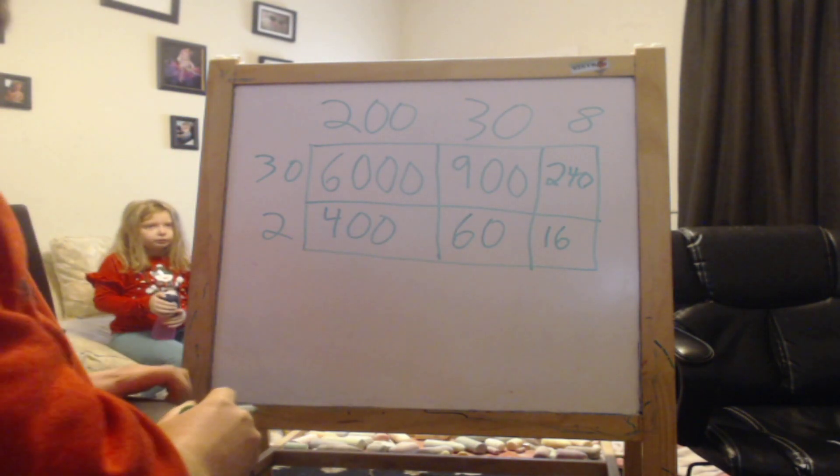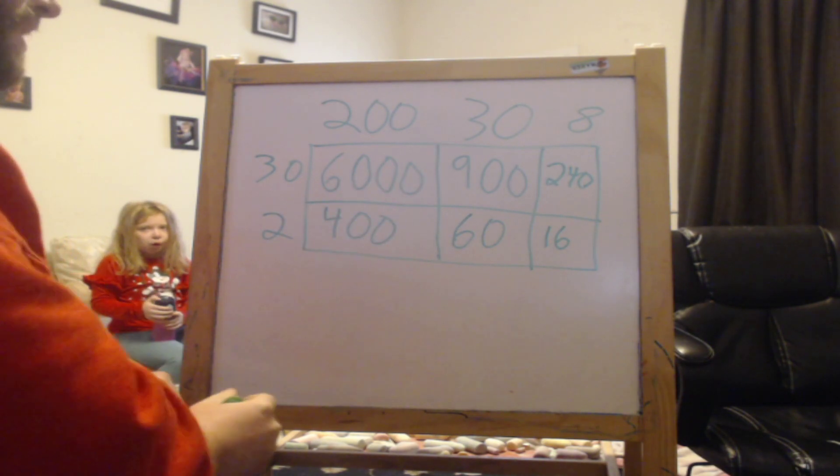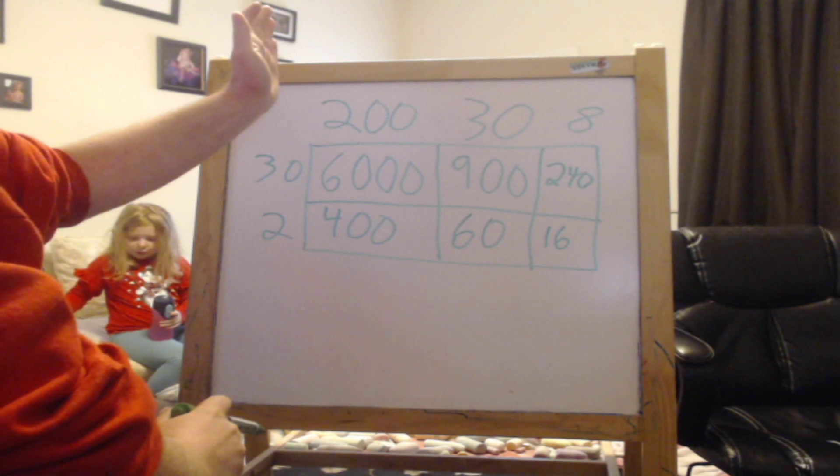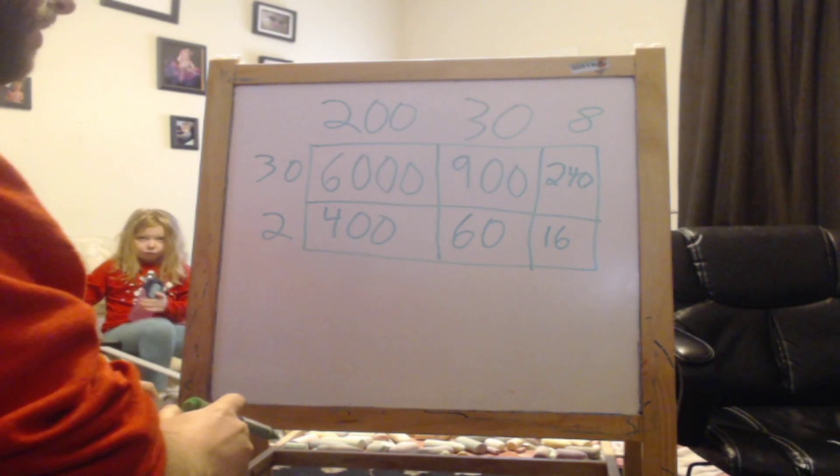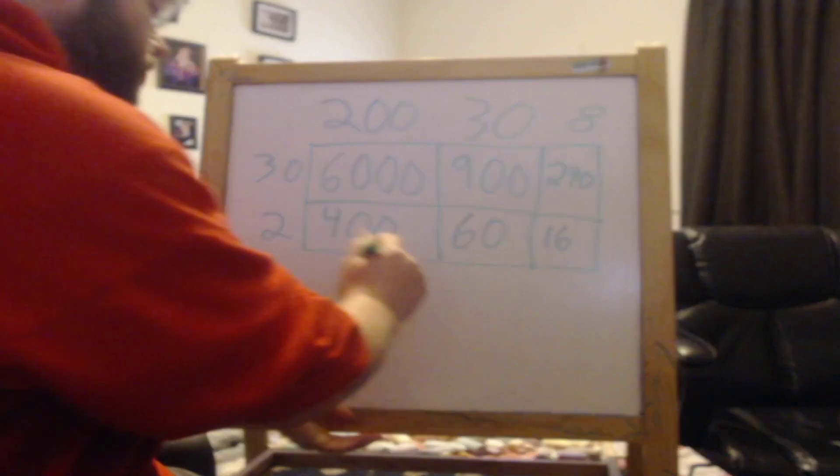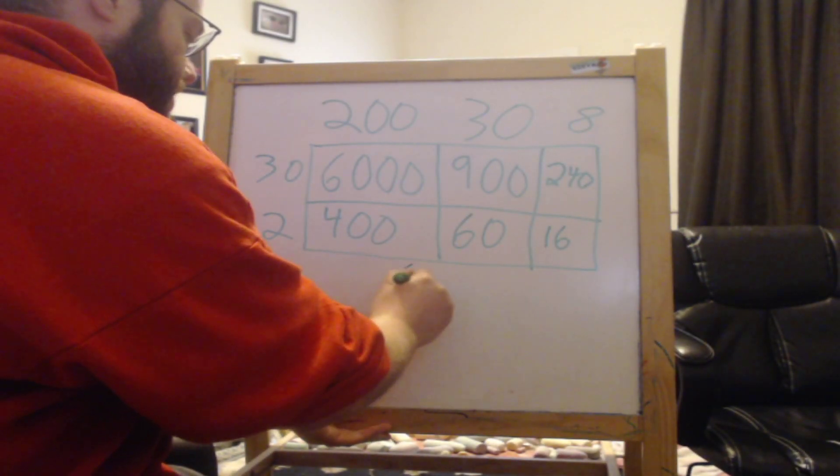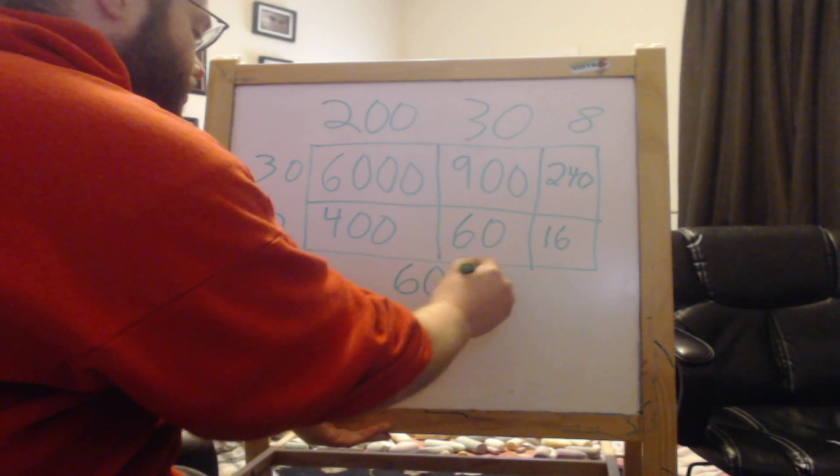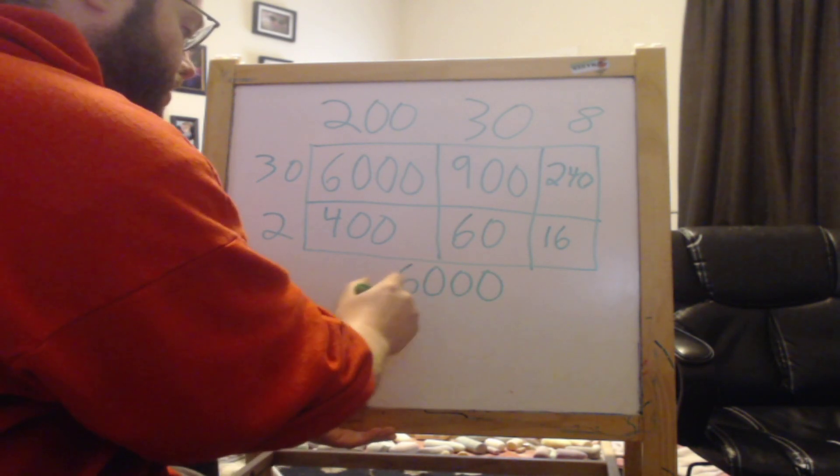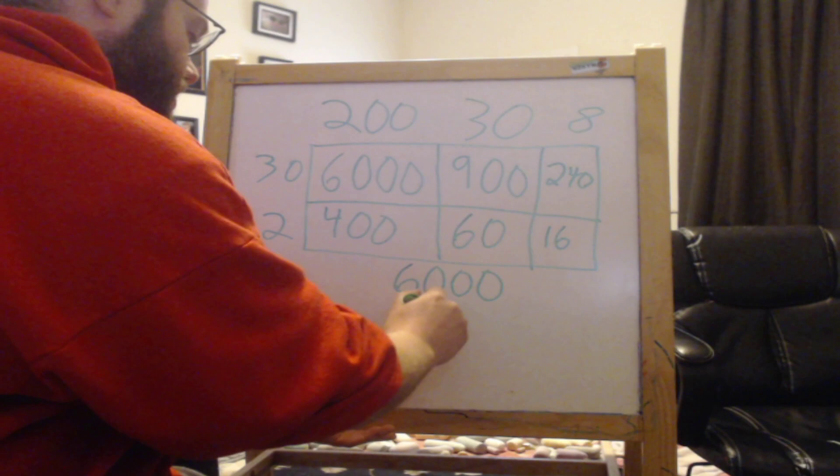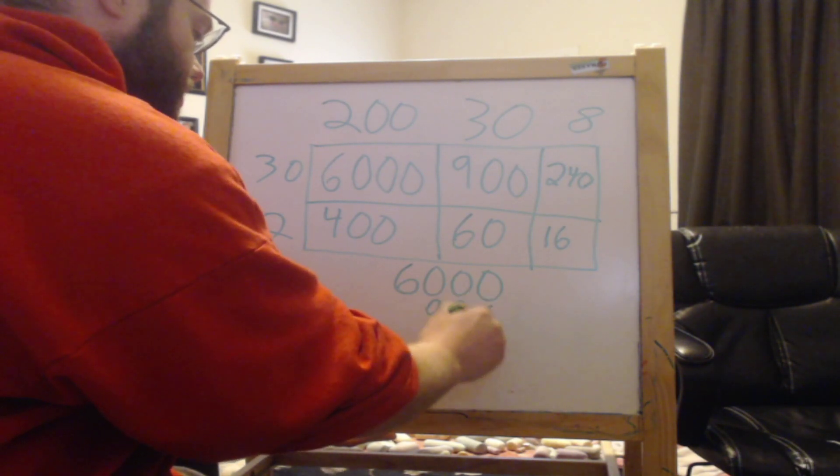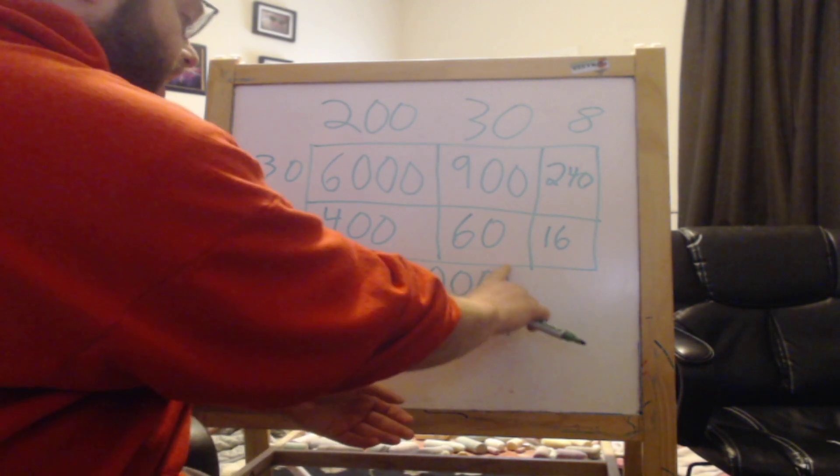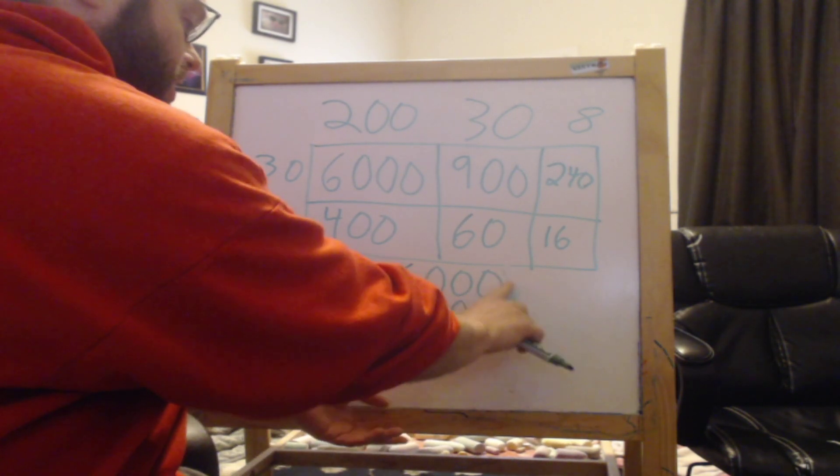Now here is the tough part. Maybe the best thing to do is you need to make sure that you line these up when we add all of these numbers together. Because if you don't line the place values up, you will get the wrong answer. It's probably best to do biggest to smallest. So we're at 6,000.